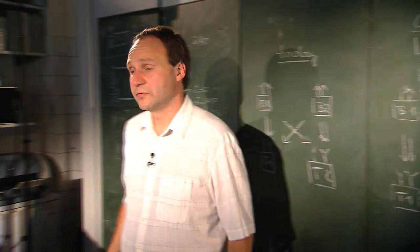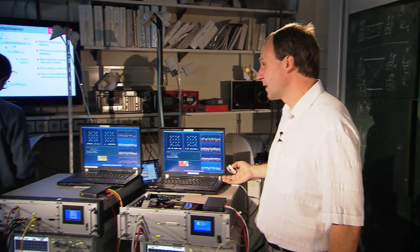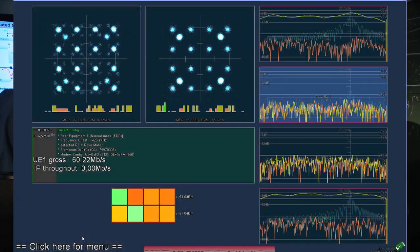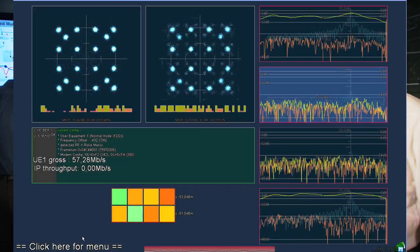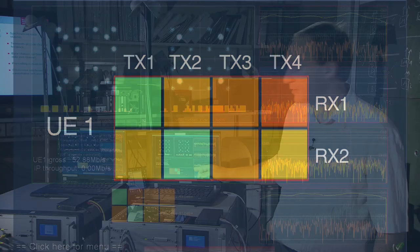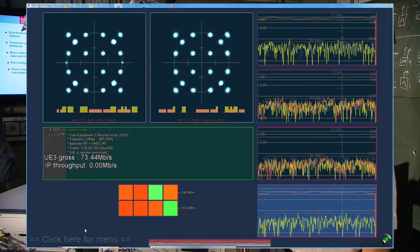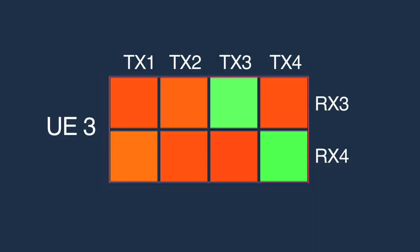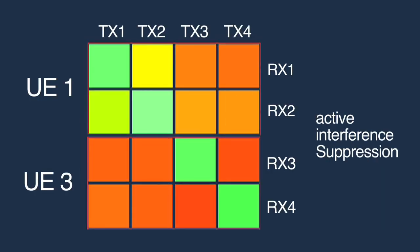I can show you this at our terminals in the experimental system. Each of these terminals is getting two data streams, which you see at the constellation diagrams here. This small box shows how the interference reduction actually works. The two green boxes are the two data streams for this terminal receiving in its own cell, and the red boxes are the signals intended for the terminal in the other cell. You can see the signals are much weaker, so we can observe that the interference reduction has worked correctly.